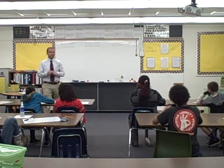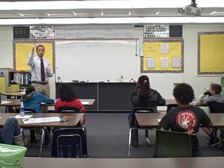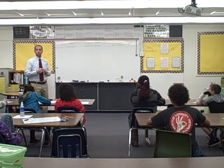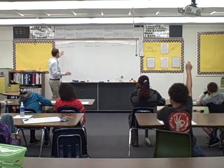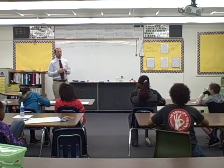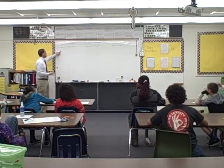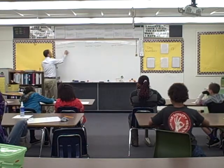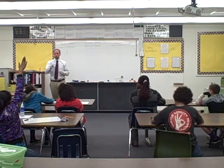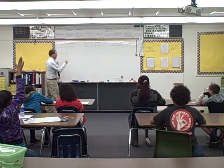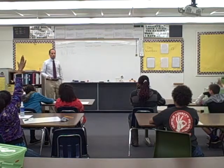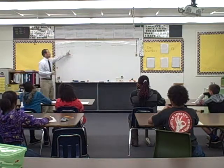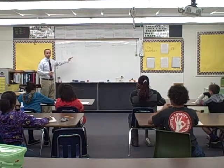Can somebody raise your hand and give me an example where the numerator, which is the top number, is less than the denominator? One-half — is one less than two? Yes. Two-fifths — is two less than five? Yes. Twelve over a hundred. Five over ten. All of those have a numerator that is smaller or less than the denominator.